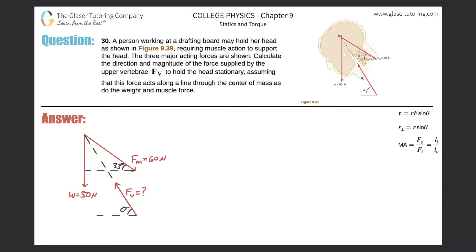Problem 30: A person working at a drafting board may hold their head as shown in figure 9.39, requiring muscle action to support the head. The three major acting forces are shown. Calculate the direction and magnitude of the force applied by the upper vertebra F_v to hold the head stationary, assuming that this force acts along a line through the center of mass, as do the weight and muscle force.